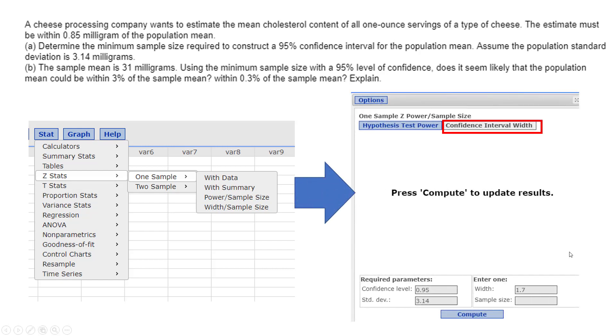And then when you click on it, this box opens and you have to click Confidence Interval Width. So be sure you click on that, and then you plug in everything you know. So you know 95%, standard deviation, but what's up with the width?